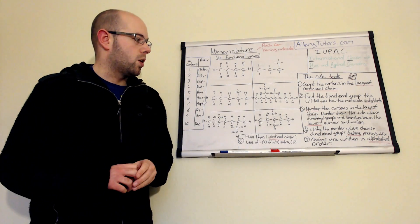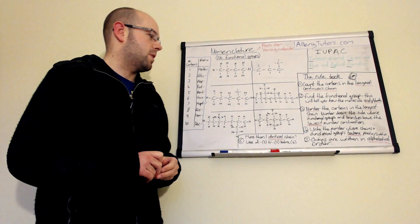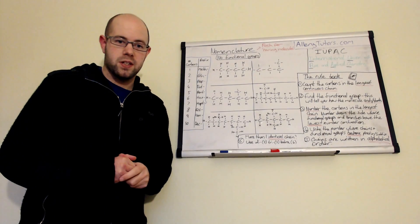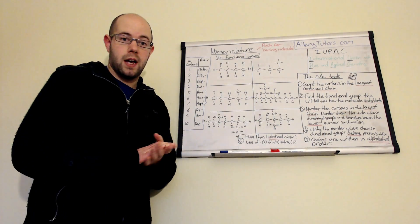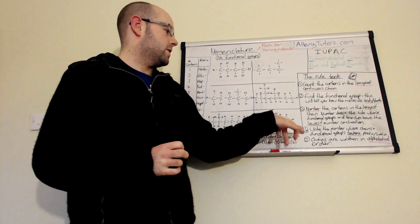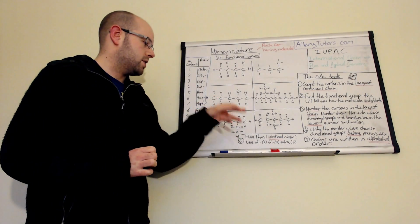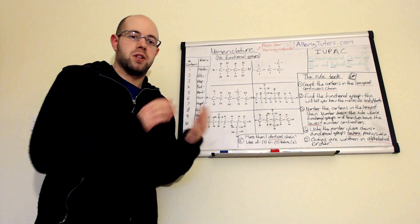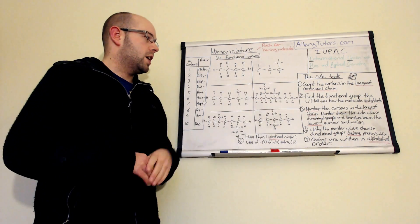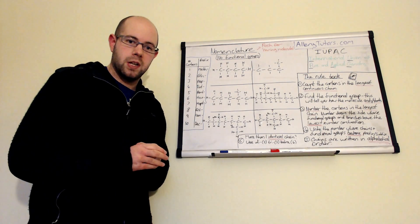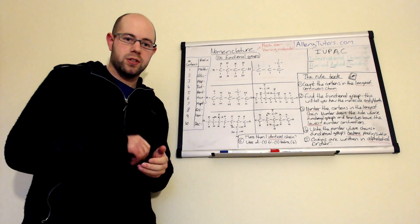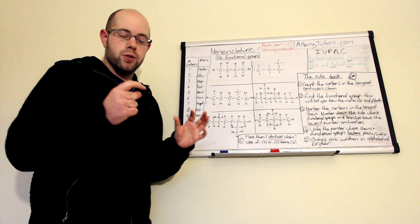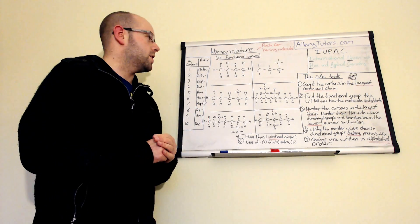Write the number where chains and functional groups are, and put them before the prefixes and suffixes. Chains are written in alphabetical order, and if we have more than one identical chain then we use di, tri, or tetra. All these rules - apart from the ones to do with functional groups - we'll see how they apply. The first thing before we start naming is to know what we call the roots of a molecule.